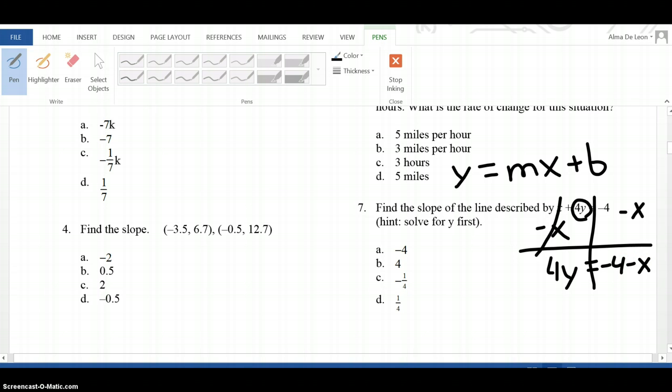Remember, the reason we do not combine the 4 and the x is because one of them has an x, the other one is just a number. Now, to get rid of that 4 in front of the y, I do the opposite of multiplying by 4, which is to divide by 4. Four divided by 4 is 1, and I have y equals 1 minus one-fourth x, and the number in front of the x is negative one-fourth, so my answer is C.